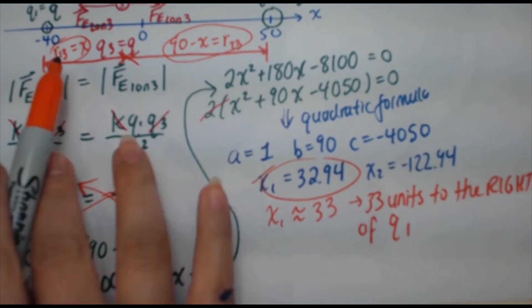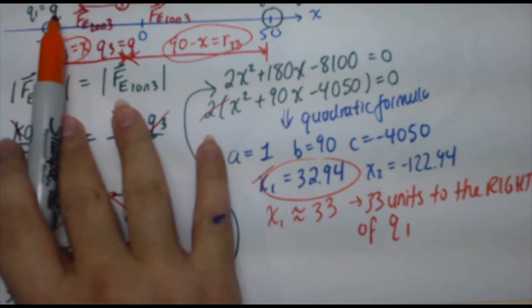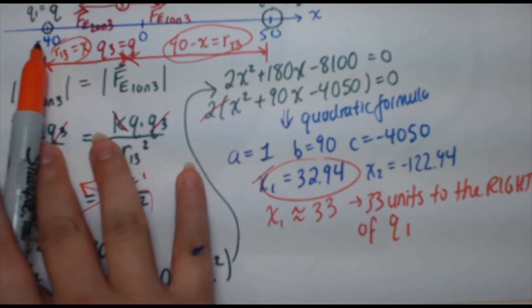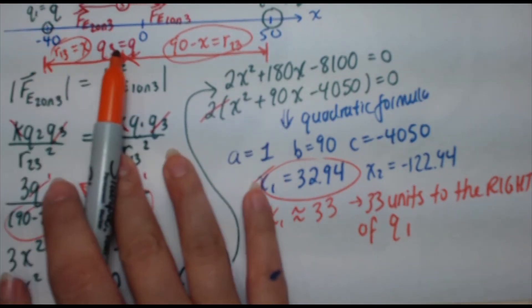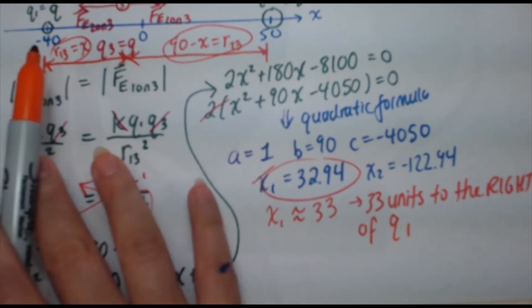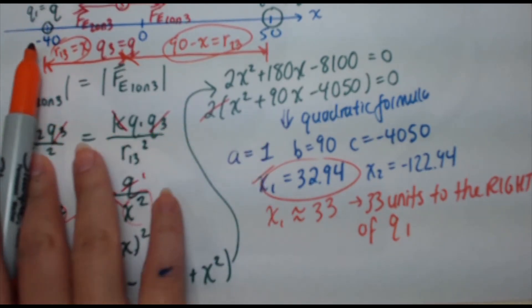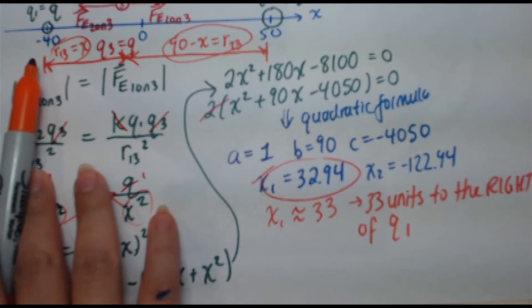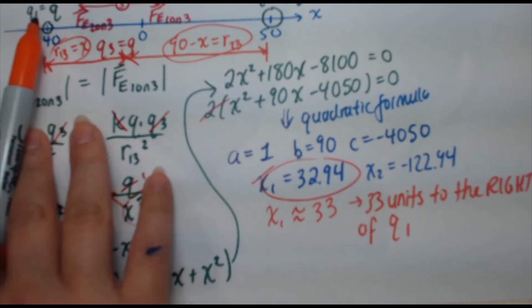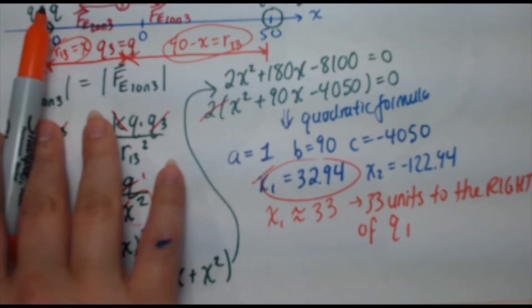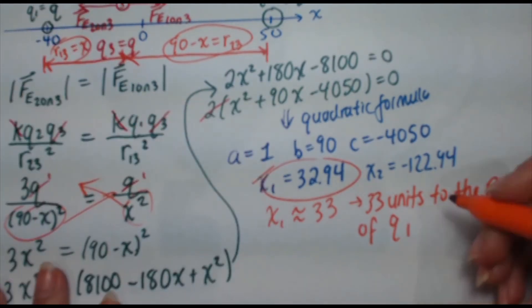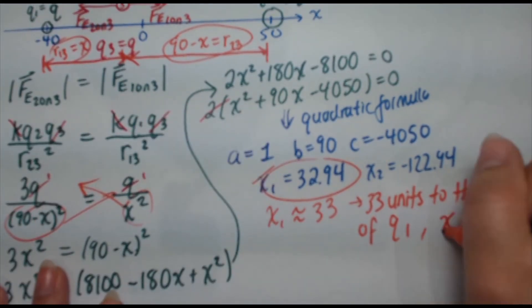of q1. And why is that? Because you see how here, where we are, where we had q1, I defined x to be that distance from here to charge three. So that means this is my starting reference point. That's my zero. So it's going to be 33 units to the right of where this is. This position is negative 40. 33 to the right of negative 40 gives you negative seven. So x is equal to negative seven.